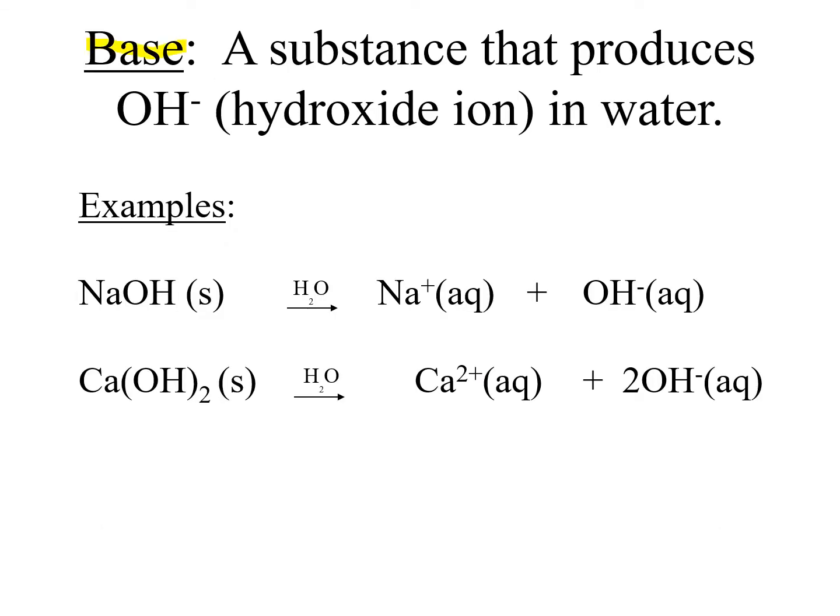A base is a substance that produces hydroxide ions when you put it into water. Some examples we have here are sodium hydroxide in the solid form. When you add that into water, you get sodium ions and hydroxide ions. And it's these hydroxide ions that make it basic. Another example might be calcium hydroxide. We have the solid form. We put it into water. We form calcium ions and then hydroxide ions. And again, it's these hydroxide ions that make it basic.